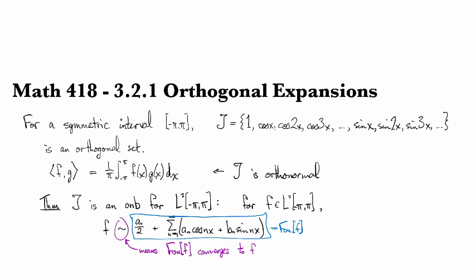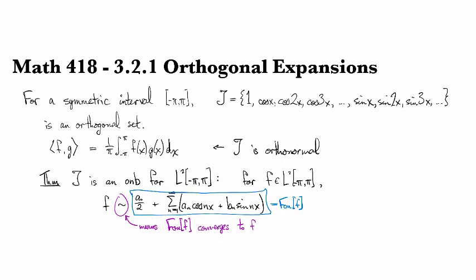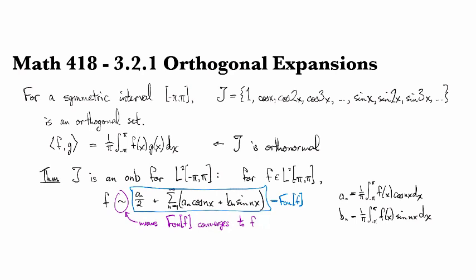I should just be super clear and specify: a_n is 1 over pi integral minus pi to pi f(x) cosine nx dx, and b_n is 1 over pi integral minus pi to pi f(x) sine nx dx. So those are the Fourier coefficients. This is all on the symmetric interval from minus pi to pi.